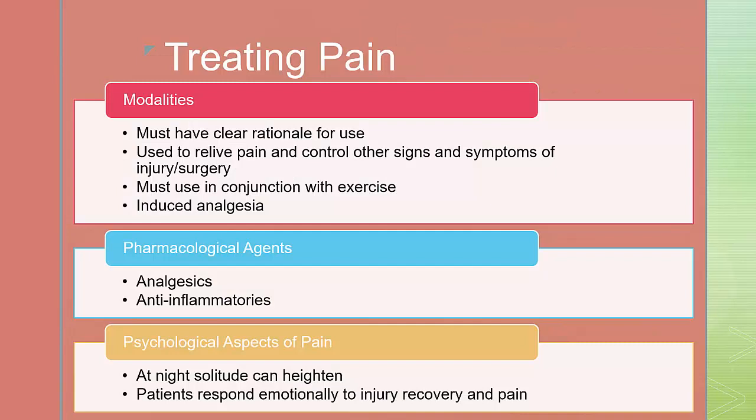In the treatment of pain, we often use modalities. You need to have a clear rationale for the use of different modalities, and they need to be utilized in conjunction with exercise. We can introduce thermal agents for pain control, utilize electrical modalities to reduce pain, and acupuncture, electrical stimulation, and deep massage can be used to stimulate an endorphin release. Pharmacological agents can be taken orally or injected, commonly using analgesics and anti-inflammatory properties. It is important to work with referring physicians or pharmacists to ensure the patient is taking appropriate medications for their condition. Pain is not just physical, but psychological as well. Pain is often worse at night due to solitude and the absence of external distractions. Personality differences can also have an impact on the perception of pain, and a number of theories relative to pain threshold and pain theories exist.